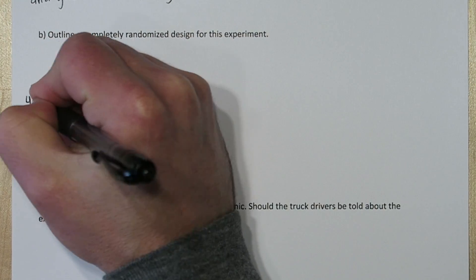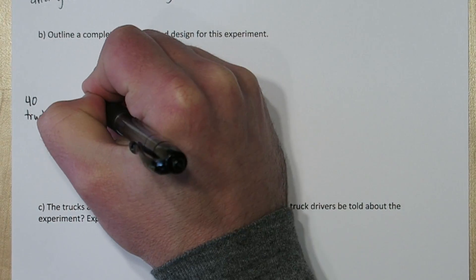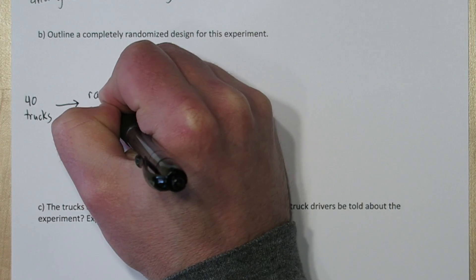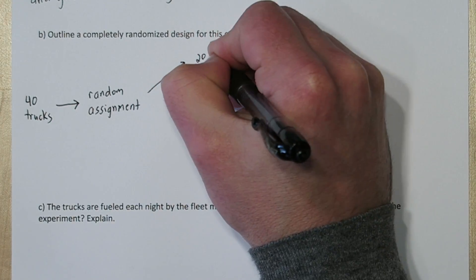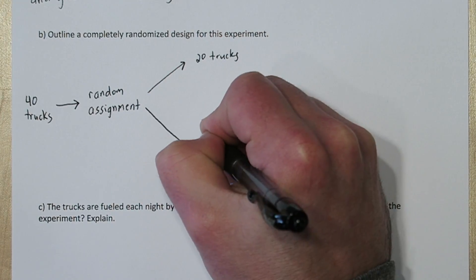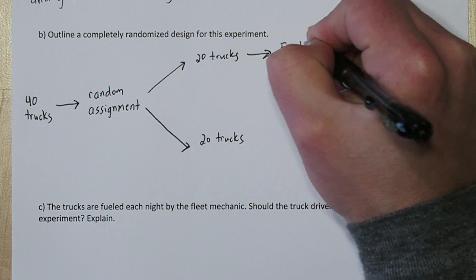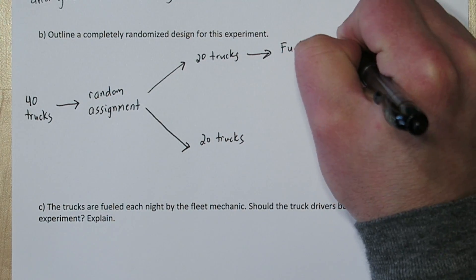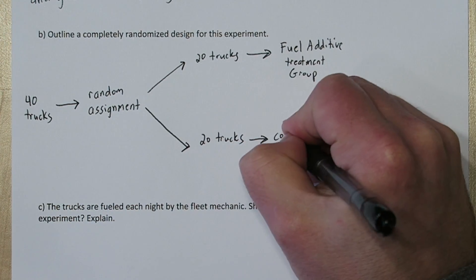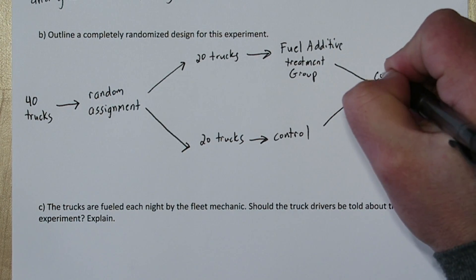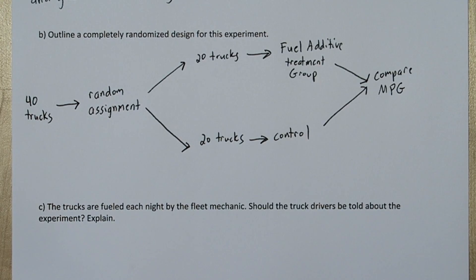I like to use diagrams to outline my experimental designs. So we're going to start with 40 trucks, and then use random assignment to divide them into two groups of 20 trucks each. We're going to give one group of trucks the fuel additive — that's our treatment group. The other group we're not going to do anything to. Then we're going to compare the MPG between the two groups.